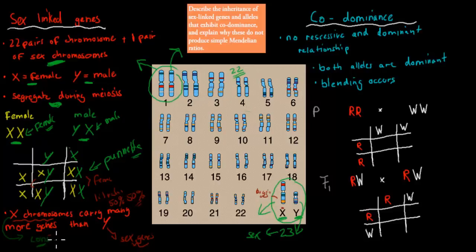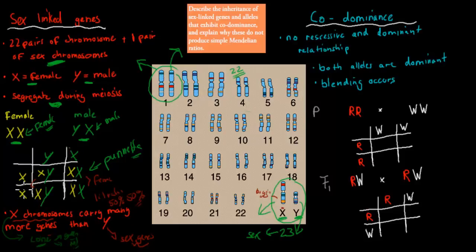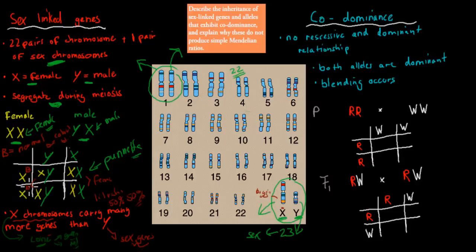When there's a problem with the X chromosome, that means only one cone is being produced instead of both. So if we use notation where capital B stands for normal vision and small b stands for colour blind — and colour blindness is recessive — if a female had one normal X and one colour-blind X, the colour blindness is recessive.